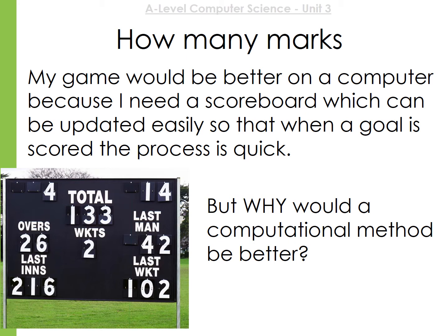Your programming doesn't need to be great, but it can be quite easy to get 10 marks on this section if you have justified your answers. Here's an example: 'My game would be better on a computer because I need a scoreboard which can be updated easily so that when a goal is scored the process is quick.' However, this doesn't actually answer why we would need computational methods — a physical cricket scoreboard can also be updated instantly by someone standing there watching the match.